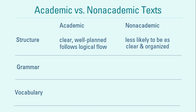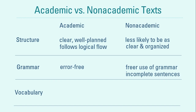Both academic and non-academic texts follow some form of structure. However, academic texts strictly follow a specific structure — a research paper follows a unified structure all researchers must use, and an essay always starts with an introduction, not the body or conclusion. Non-academic writers are given more freedom to experiment. Non-academic texts may also contain incomplete sentences — not because authors don't know how to write, but as part of their style.